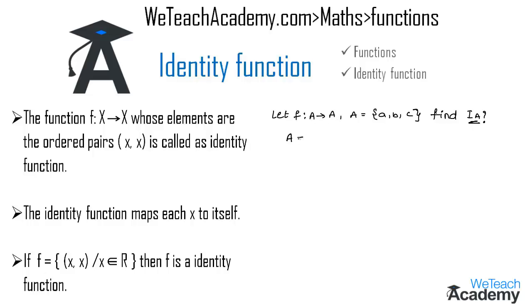So first, given the elements of the set A as a, b, c. Now let us draw here two Venn diagrams and name both the Venn diagrams as A, since f is a mapping from A to A. And now let us write the elements of the set A - a, b, and c - in both the Venn diagrams.